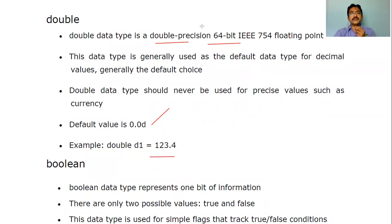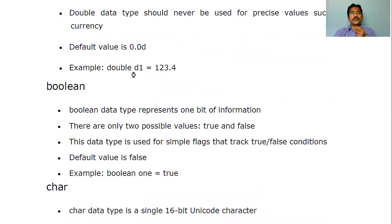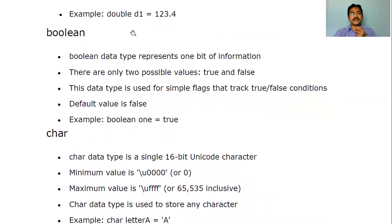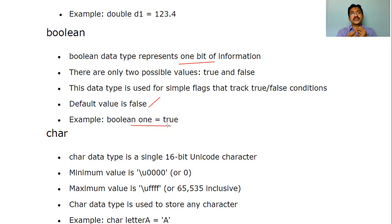Next is boolean — it stores true or false, so it is one bit. The default value is false. We can declare it like: boolean b1 = true. This is an initialization. For every data type, the last line shown is an initialization example demonstrating how you are going to use that data type.